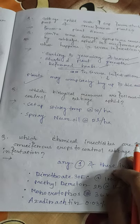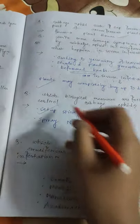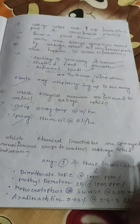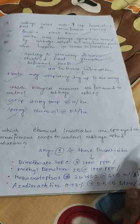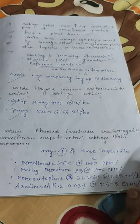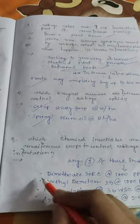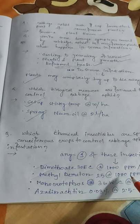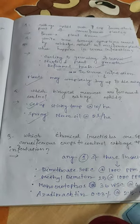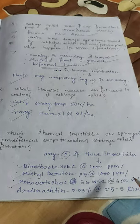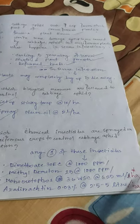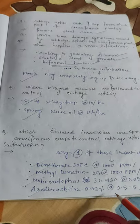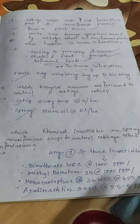Biological measures to control cabbage aphid: set up sticky traps at the rate of 10 per hectare, and spray neem oil at the rate of 2 litres per hectare. Chemical insecticides: Dimethoate 30 EC at 1000 ppm, methyl demeton at 1000 ppm, Monocrotophos 36 WSC at 625 ml per hectare, or Azadirachtin 0.03% at 2.5 to 5 litres per hectare.